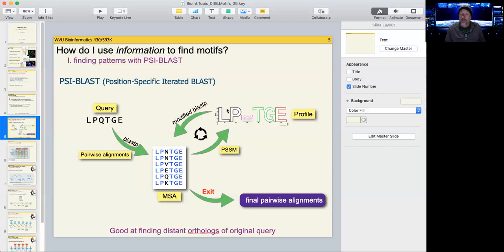build a new frequency matrix, new profile, and search using that profile. At some point BLAST will stop finding new sequences or you will get tired of iterating and you can exit. It gives you a list of the final pairwise alignments that match your query.